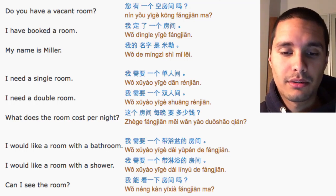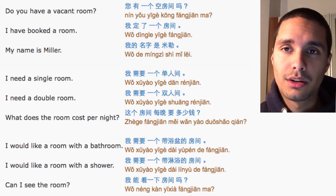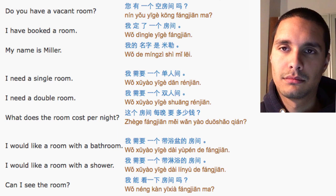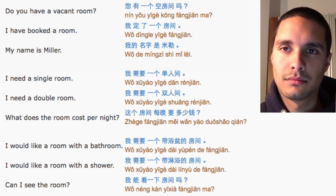Chinese lesson number 27: Indie Hotel - Arrival. 在宾馆到达